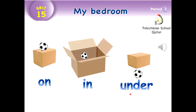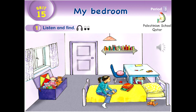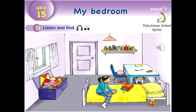Well done. My dear students, look at this picture. Tell me, what can you see? You can see a window, a box, a doll, a ball, a book, Jamila, and a car.